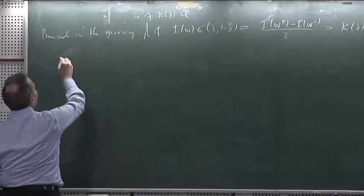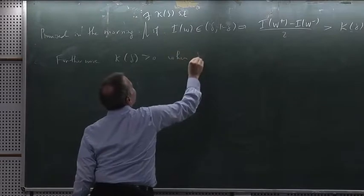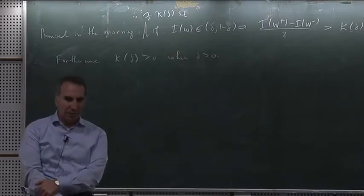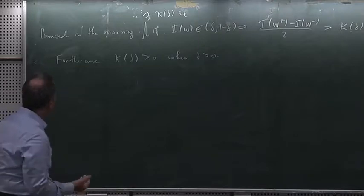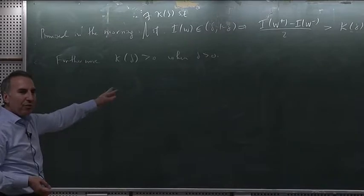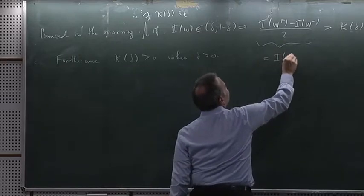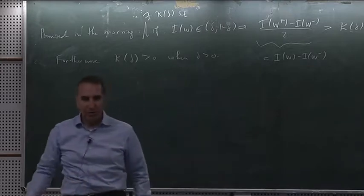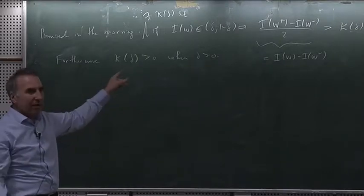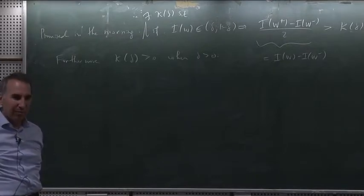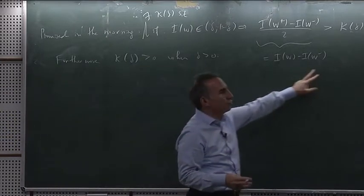Furthermore, this kappa of delta is positive when delta is positive. That's the thing to prove. So let's see what is going on with these things. First of all, this is exactly the same as I_W minus I_W minus. Since I_W plus, I_W, I_W minus are in arithmetic progression, the difference between the ends is the same as twice the difference at the middle. So this is what I have to show.